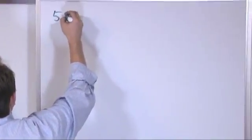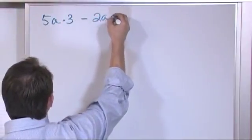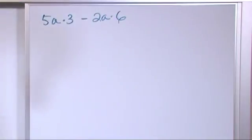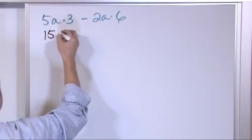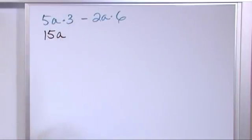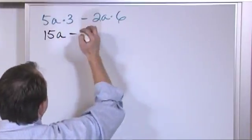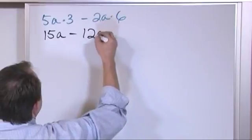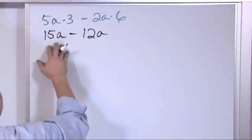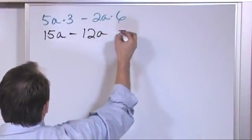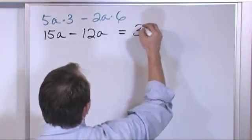Let's say we have 5 times a times 3 minus 2a times 6. For the first part, five times three is fifteen, and a comes along, giving 15a. Then two times six is twelve, and a comes along, giving 12a. Now we have two like terms: 15 minus 12 is three. The answer is 3a.